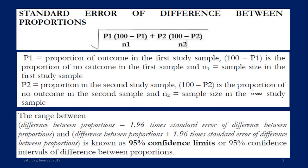The range between (difference between proportions minus 1.96 times standard error of difference between proportions) and (difference between proportions plus 1.96 times standard error of difference between proportions) is known as 95% confidence limits or 95% confidence intervals of difference between proportions.